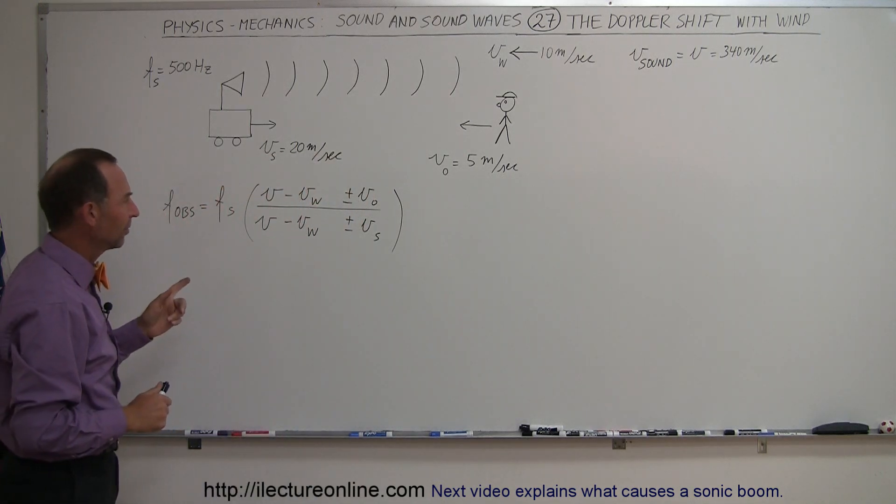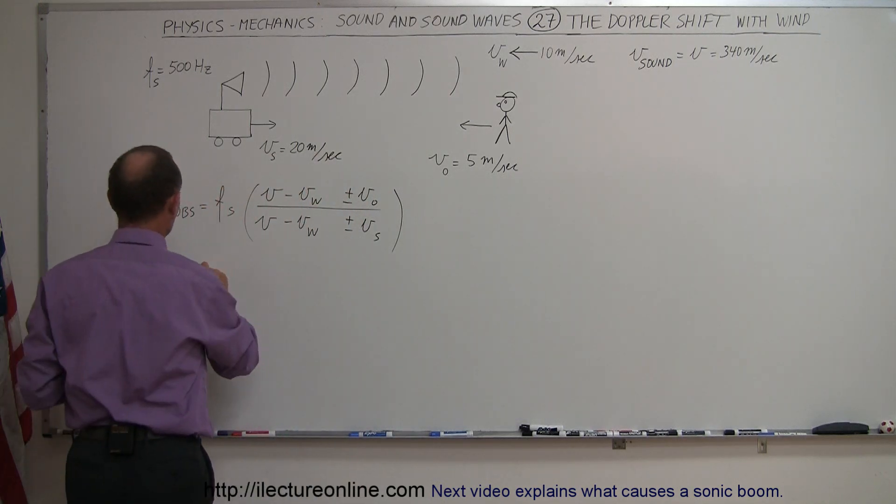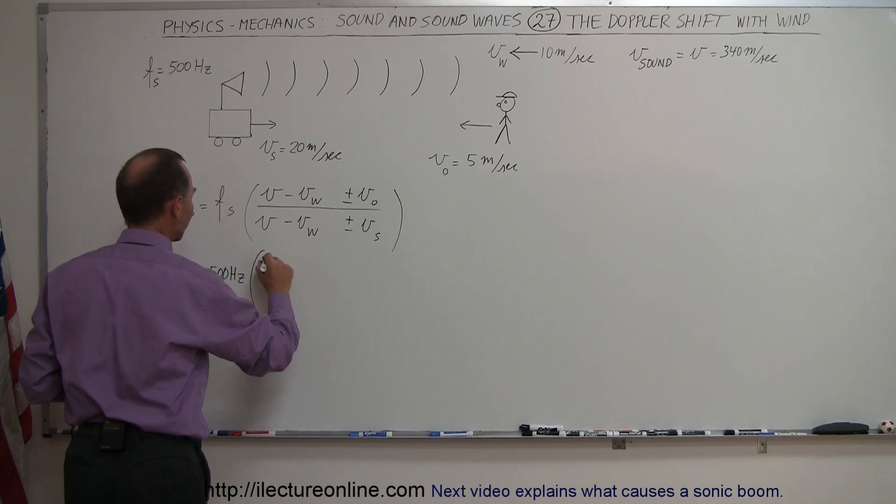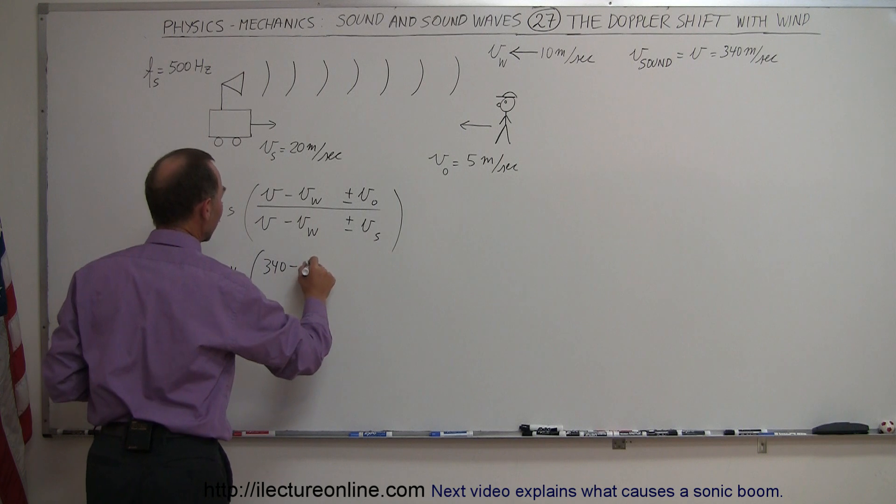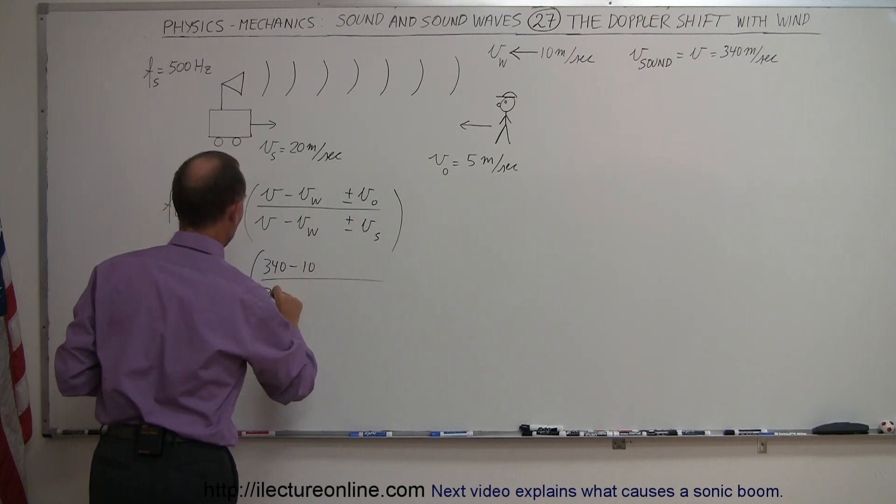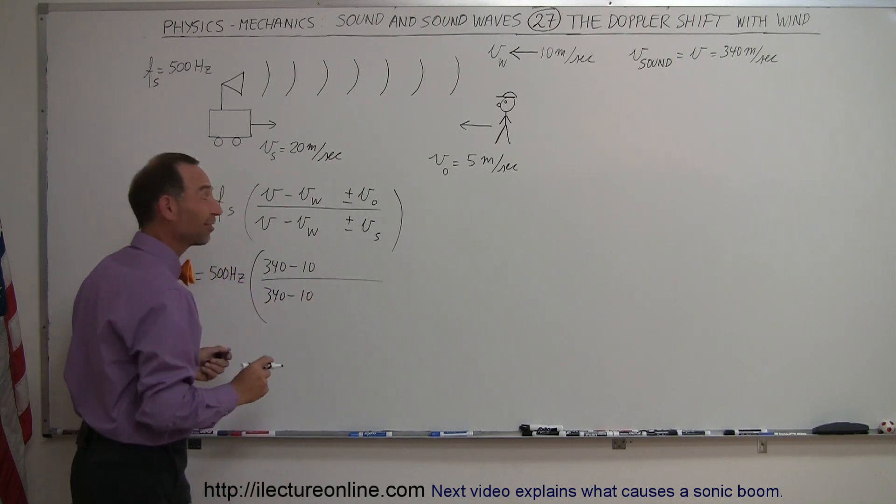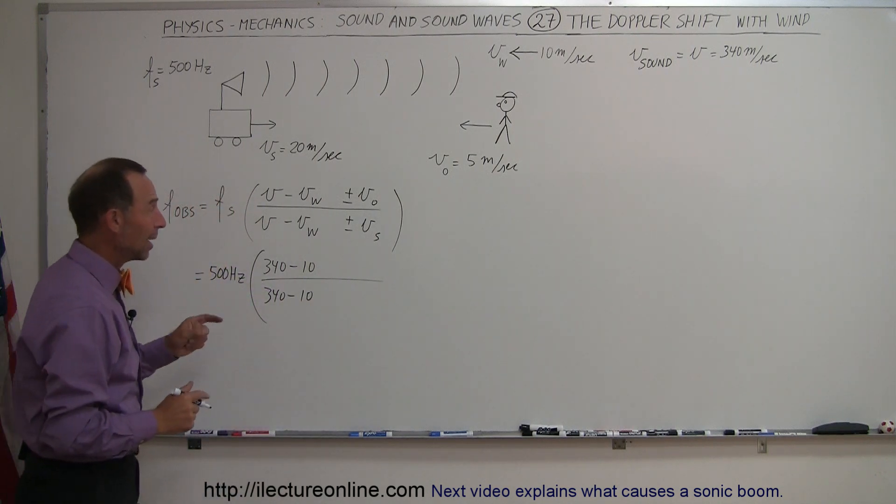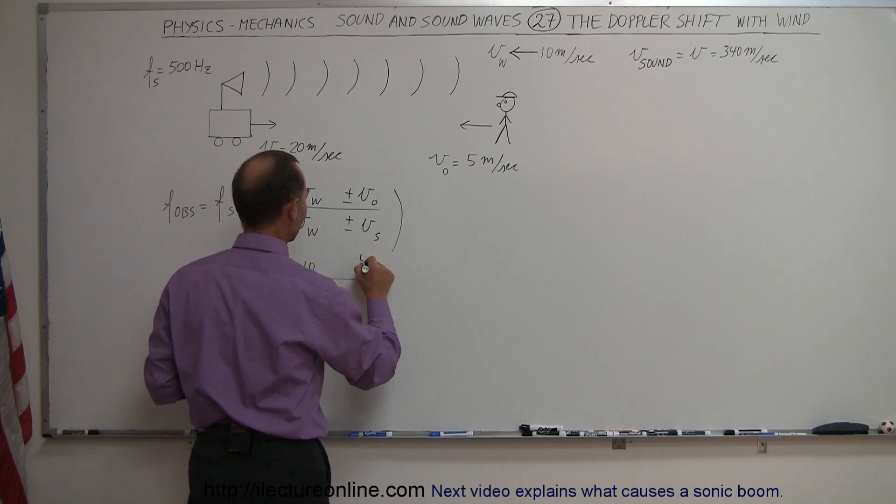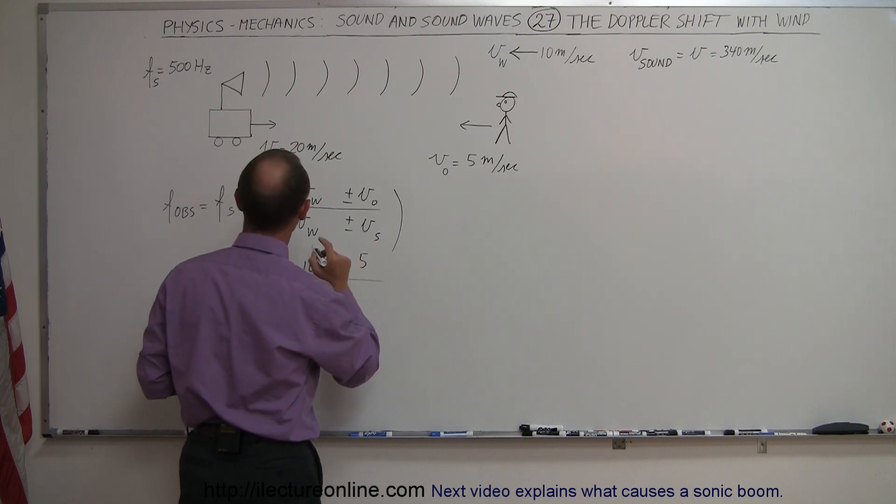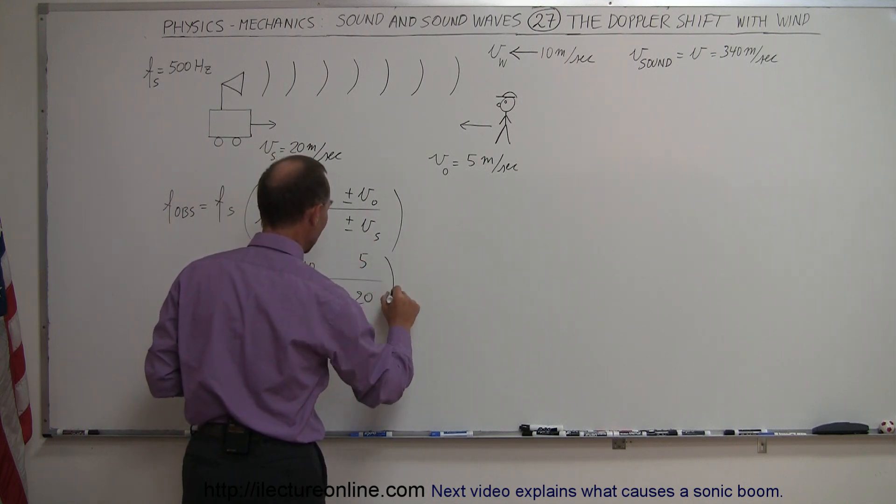The effect then is if we plug in the numbers: 500 Hertz for the source times 340 minus 10, which is the new effective velocity of sound. Now we have the velocity of the observer which is 5 meters per second, the velocity of the source which is 20 meters per second, and we have to determine if these are going to be plus or minuses.